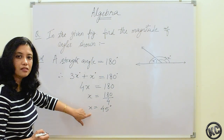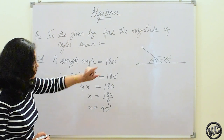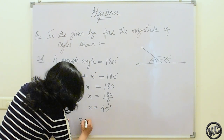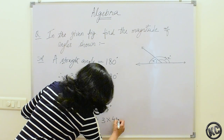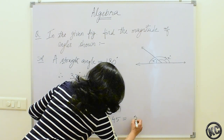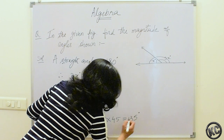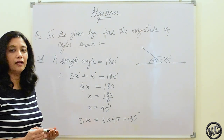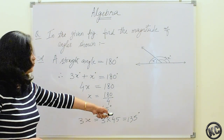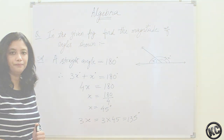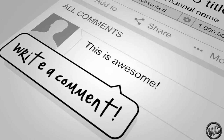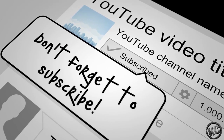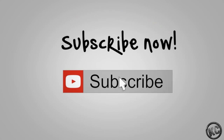We have got the value of x — one of the angles is 45 degrees. Now we have to find the other angle, which is 3x. So this becomes 3 into 45, which is equal to 135 degrees. We have found the magnitude of both the angles: one is 45 degrees and the other is 135 degrees. I'll see you in the next one.